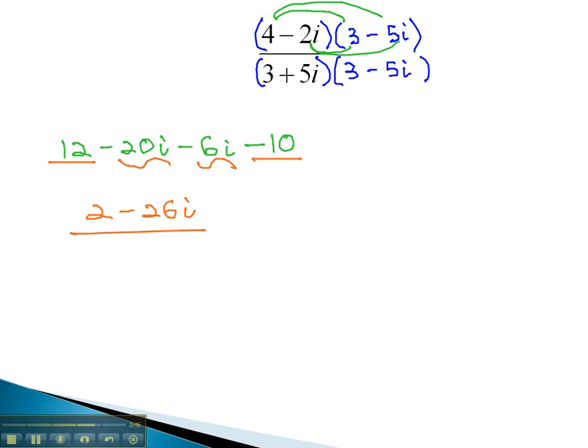In our denominator, we need to multiply the first and last terms together. 3 times 3 is 9, and 5i times negative 5i is negative 25i squared. However, because i squared is negative 1, that changes the negative 25 to a positive 25. 9 plus 25 is 34. This is our denominator.